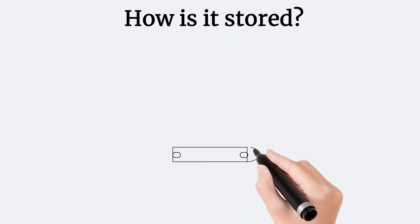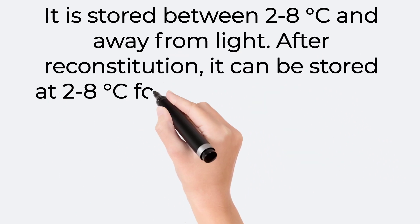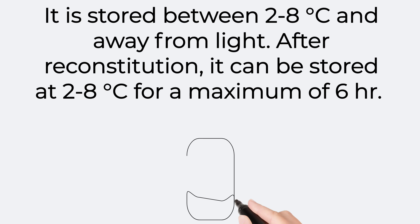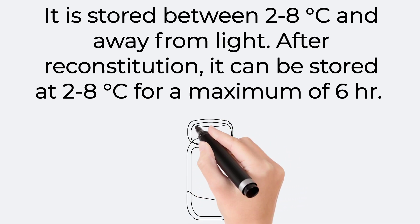How is the MMR vaccine stored? It is stored between 2 to 8 degrees Celsius and away from light. After reconstitution, it can be stored at 2 to 8 degrees Celsius for a maximum of 6 hours.